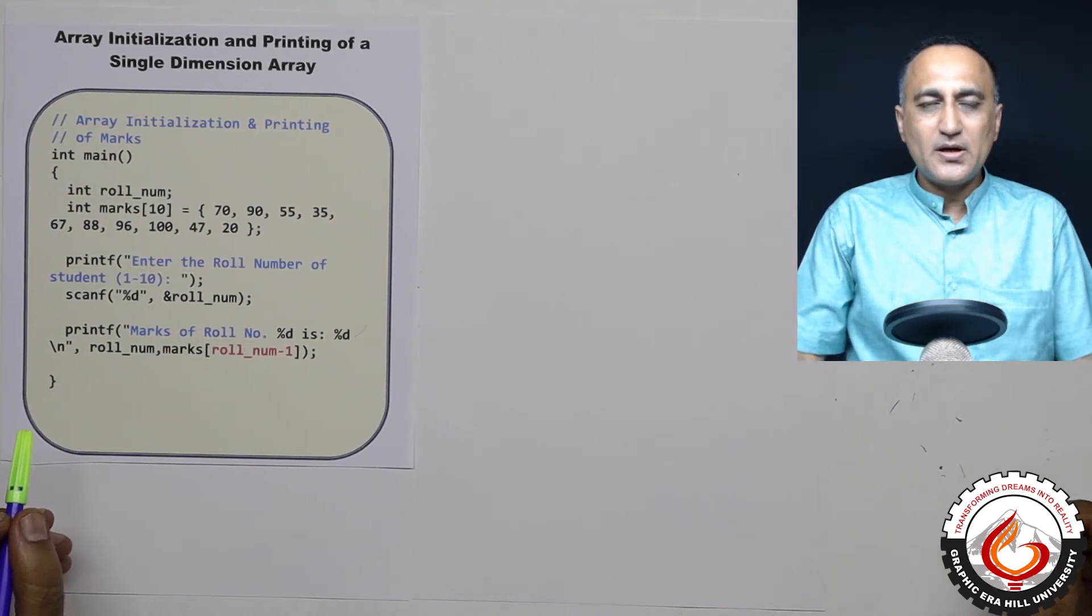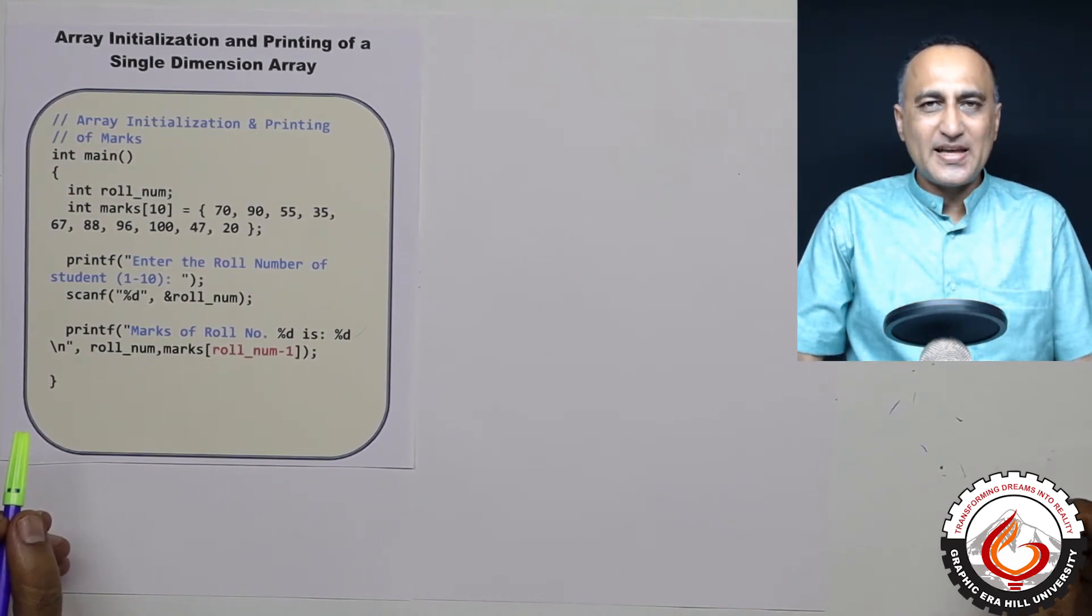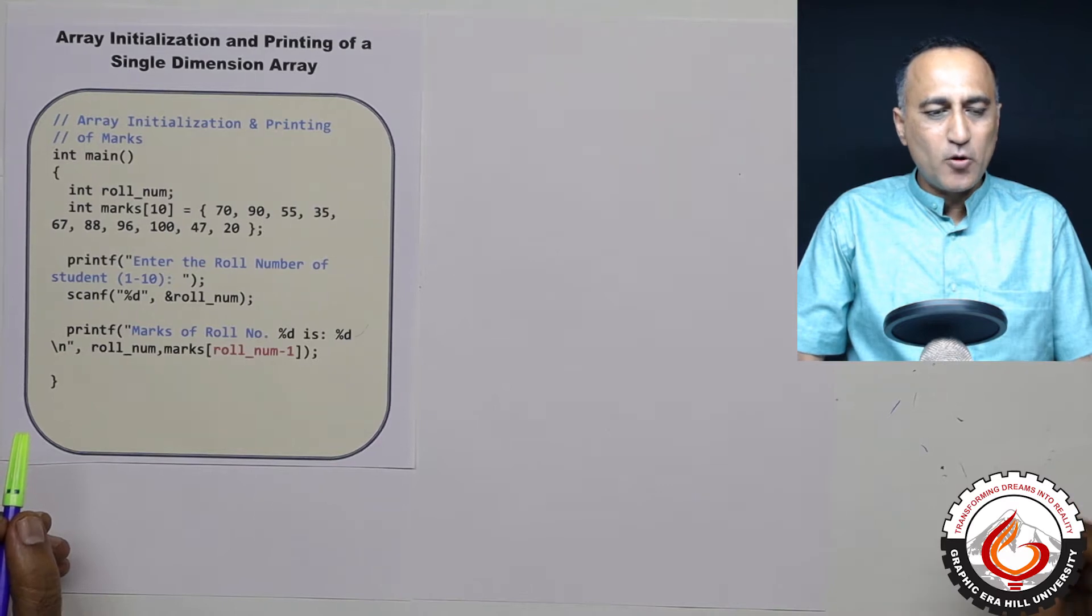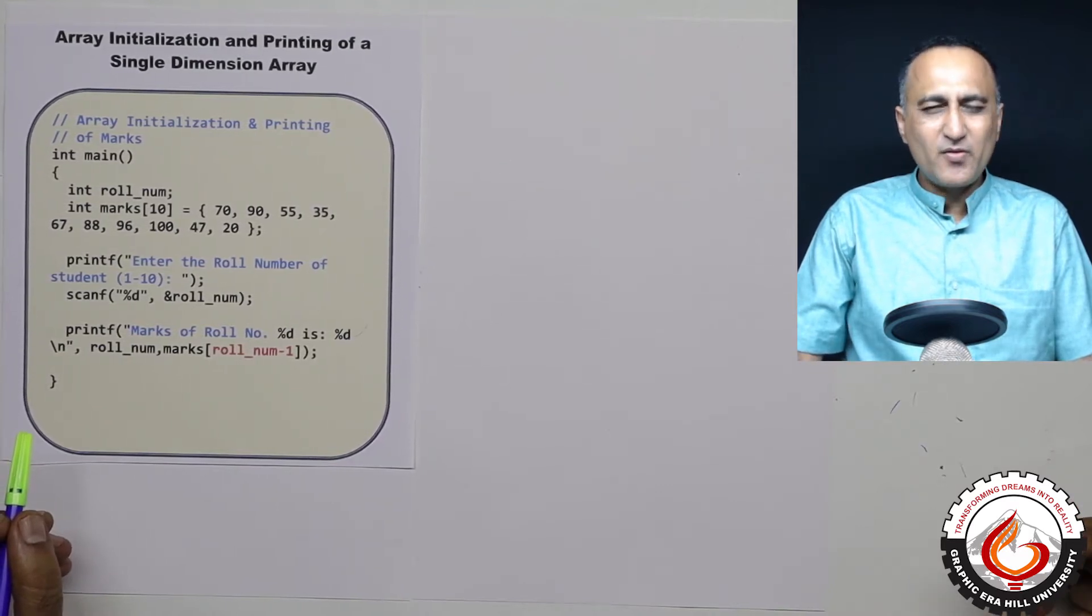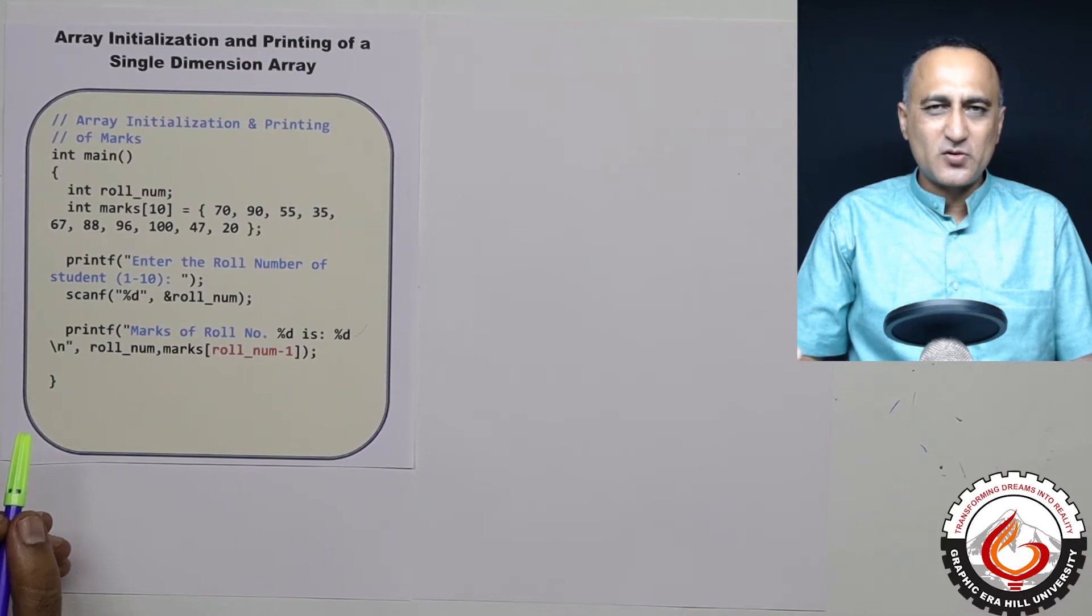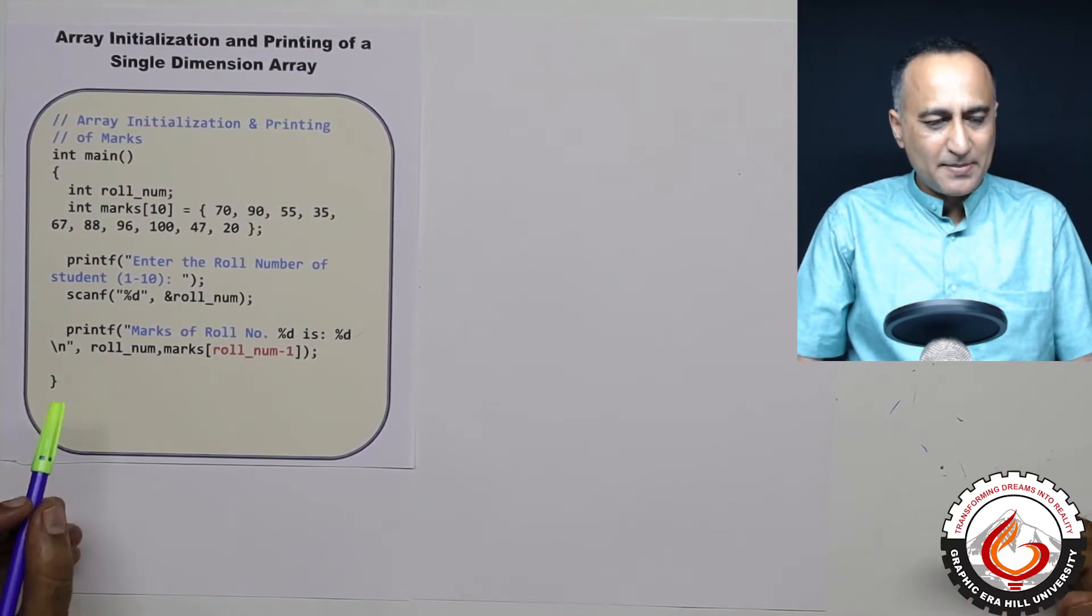The talk shall now be about how do you initialize a single dimensional array and how do you go about printing the elements of a single dimensional array. We've already done something like this before, but just to get the concept a little more clear, I'm doing one more example.